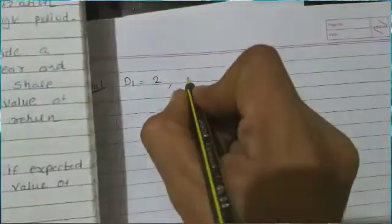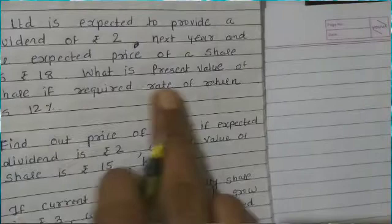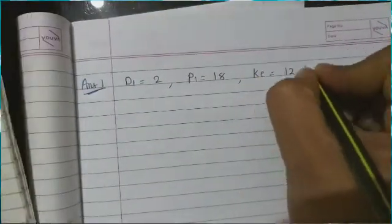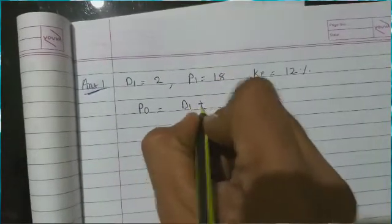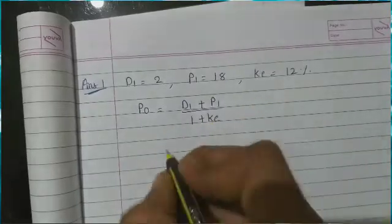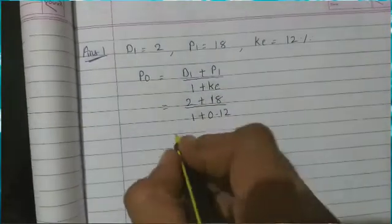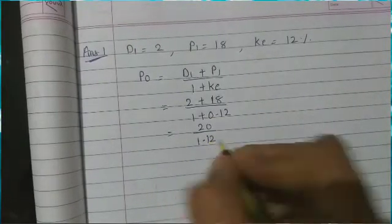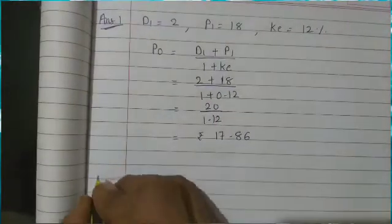Given: D1 = 2, P1 = 18, and KE = 12%. Since D1, P1, and KE are all given, we use the first formula: P0 = (D1 + P1) / (1 + KE) = (2 + 18) / (1 + 0.12) = 20 / 1.12. The answer is Rs. 17.86. These are small problems that can fetch you 2 marks.